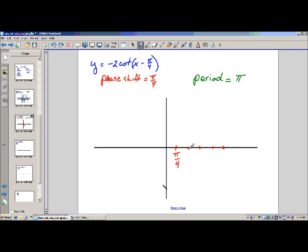1, 2 pi over 4, pi over 2, 3 pi over 4, 5 pi over 4. Go back the other way. 0, negative pi over 4, negative pi over 2, negative 3 pi over 4.